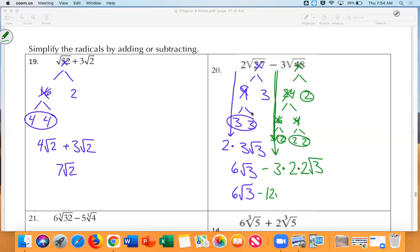And Delaney, what's 6 minus 12? So this is going to be negative 6√3.